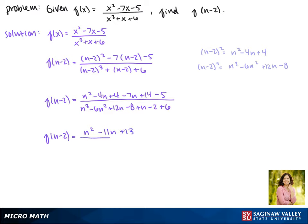In the denominator, we only have one n cubed term and one n squared term. And then we have 12n and 1n, which make 13n. For our constant, we have negative 8 minus 2, which makes negative 10, plus 6 more makes negative 4.